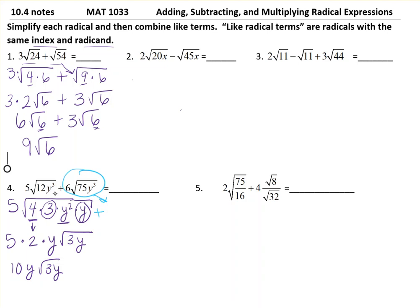It's still plus in between, so 6√(75y³). I want to think about factors of 75, and I see 25 times 3. My y³ can break up into y² times y. Now break down what you can. The 25 can break down and the y², so plus 6 times 5y√(3y), which gives me plus 30y√(3y).